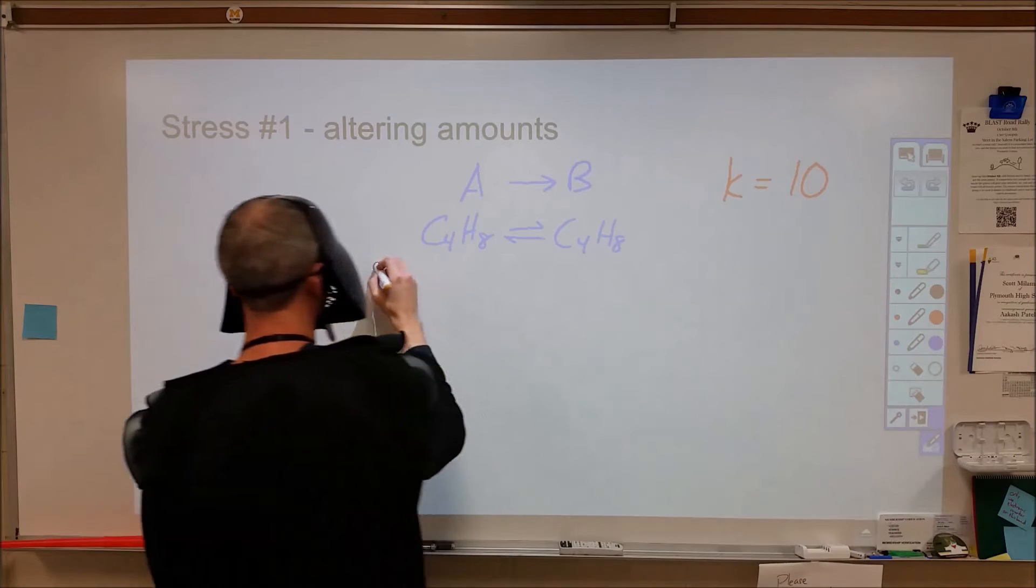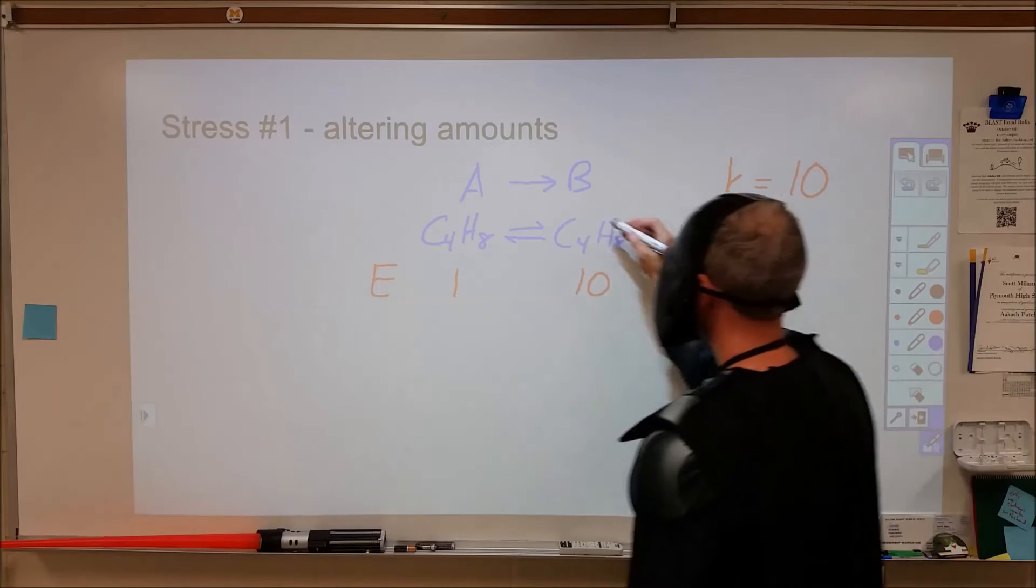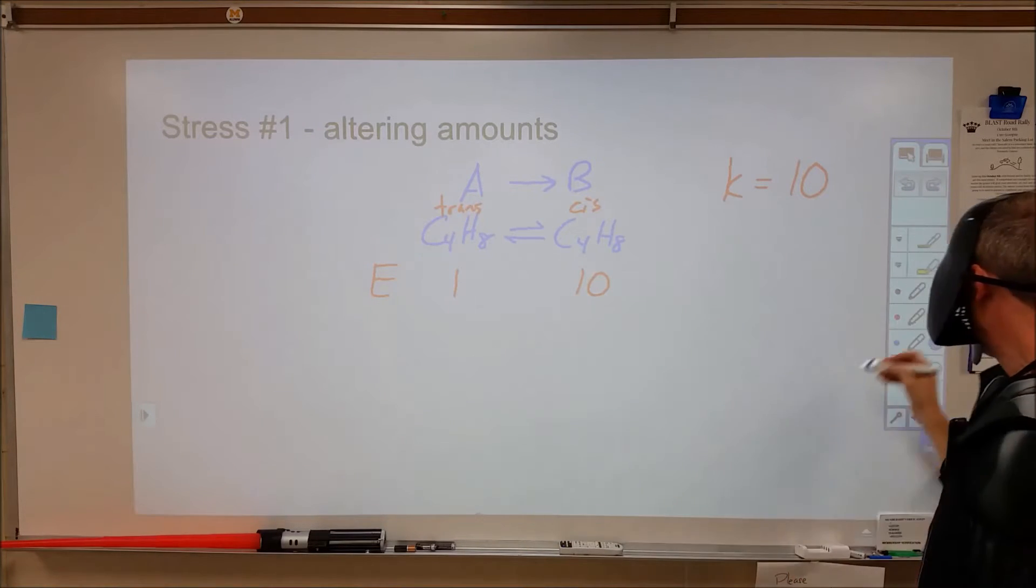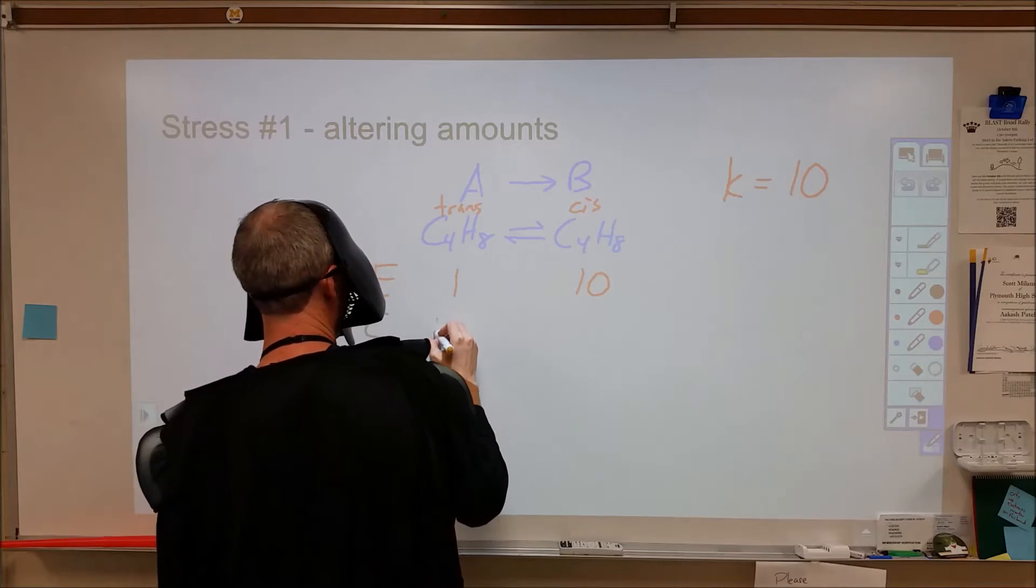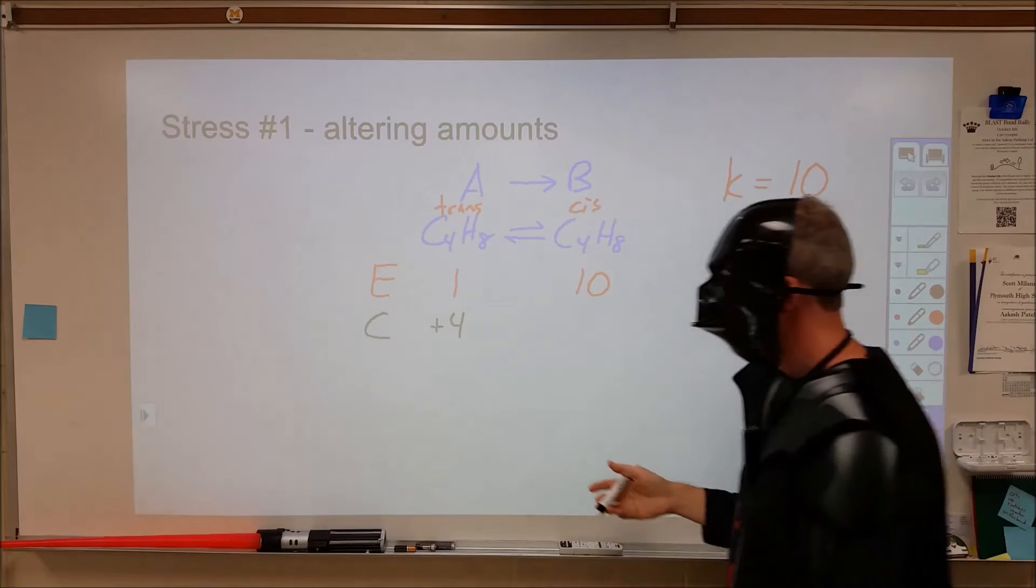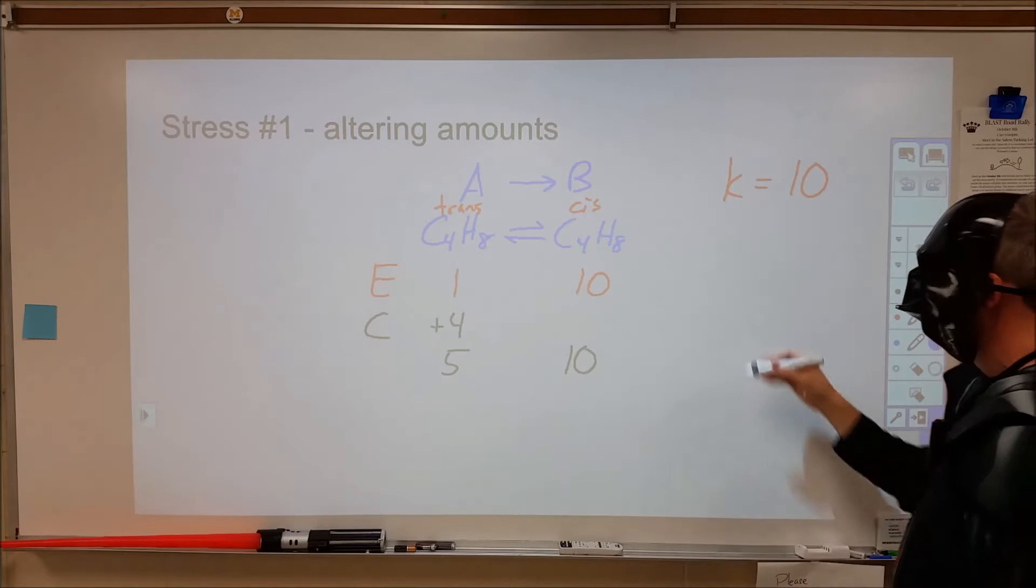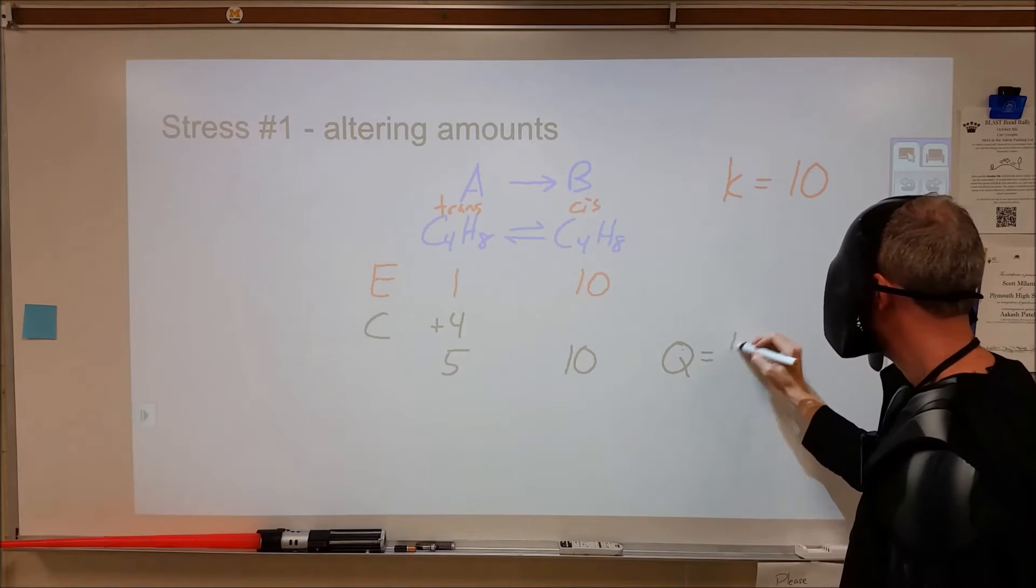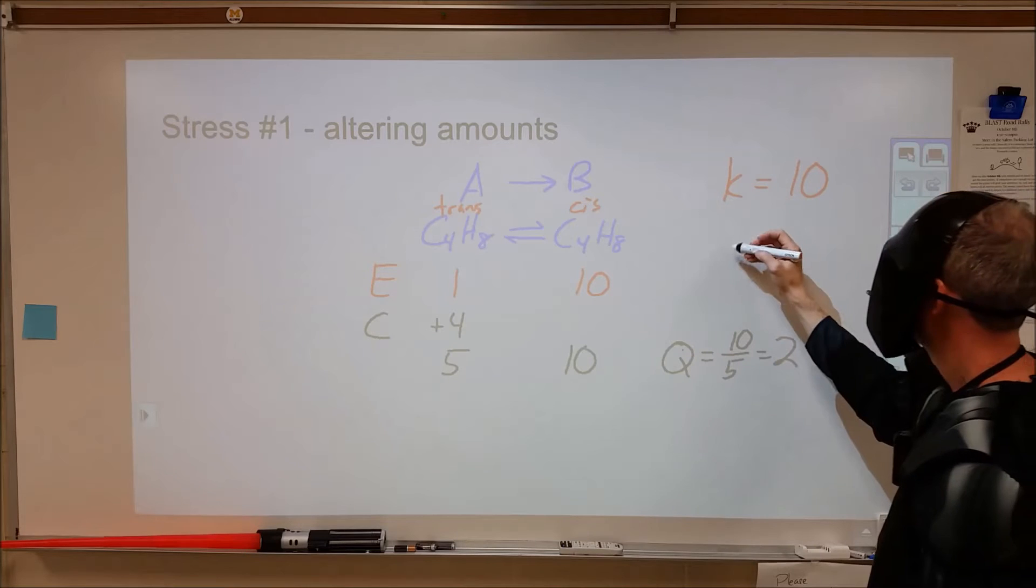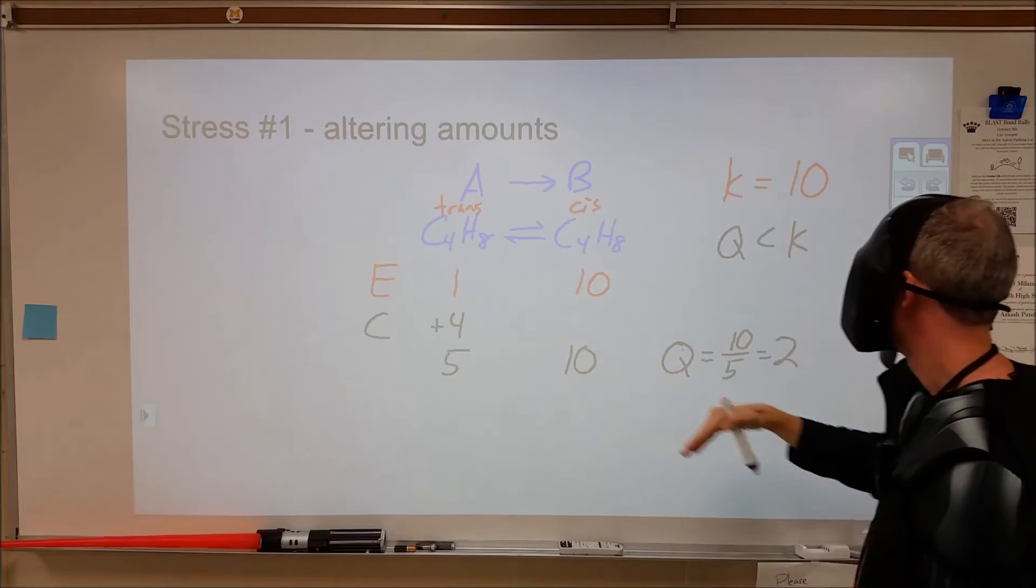We start out at equilibrium. So, we start off with one of these trans form, 10 of the cis form. Then, out of nowhere, something happens where we add from outside the system an additional 4 of the trans in terms of the concentration. Now we are not at equilibrium. We now have 5 concentration of trans and 10 molar concentration of cis. If we calculate Q at this point, we now have 10 over 5, or a Q value of 2. So, 2 is less than 10. Q is less than K, which means we have too many reactants, which makes sense. We added additional ones on top of the equilibrium.